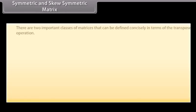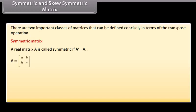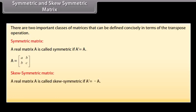Symmetric and skew-symmetric matrix: There are two important classes of matrices that can be defined concisely in terms of the transpose operation. A real matrix A is called symmetric if transpose of A is equal to A. A is a general 2×2 symmetric matrix. A real matrix A is called skew-symmetric if transpose of A is equal to minus A. Here, A is a general 2×2 skew-symmetric matrix.